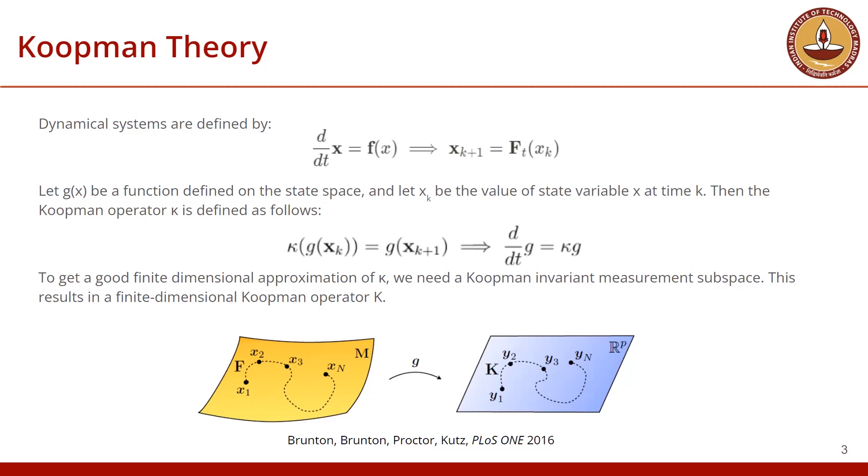If the function was smooth, we can write DG by DT equals Koopman operator times G. The big problem now becomes how to approximate this operator to a finite dimension.